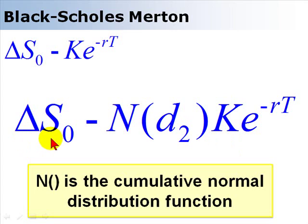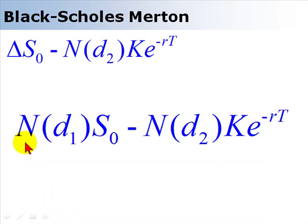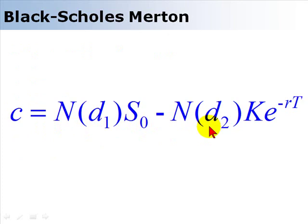On the left side, we need delta — the number of fractional shares to be long. This turns out to also be a cumulative normal distribution function, N of d1. So the delta of the option is simply this standard normal cumulative distribution N(d1).